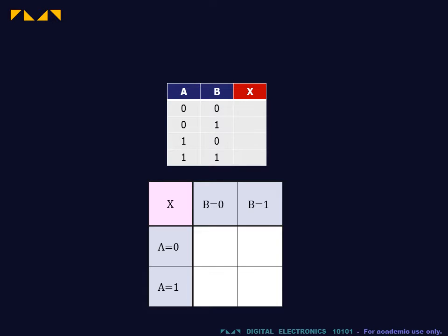In the two-input Karnaugh map, the first input A is presented in rows. The second input B is presented in columns. For each input, the value 0 is presented first, and the value 1 is presented second.